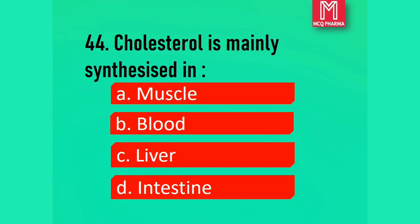Question number 44. Cholesterol is mainly synthesized in: Option A, Muscle. Option B, Blood. Option C, Liver. Option D, Intestine. Correct answer: Option C, Liver.